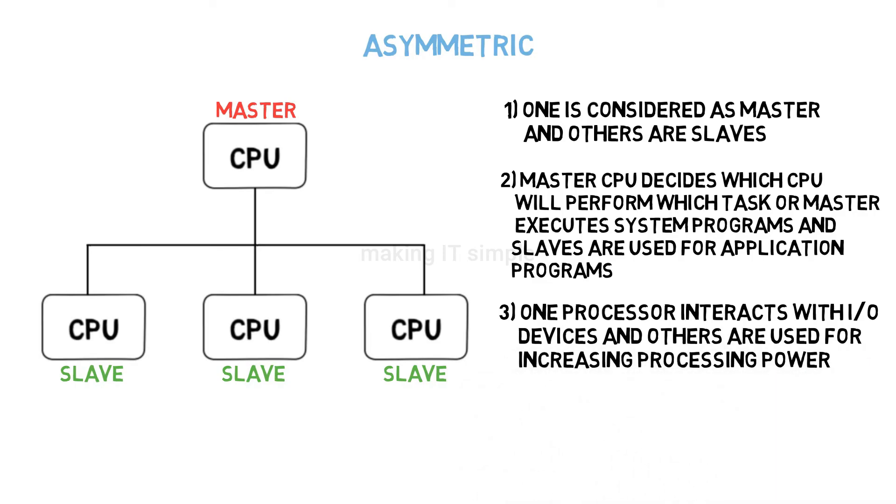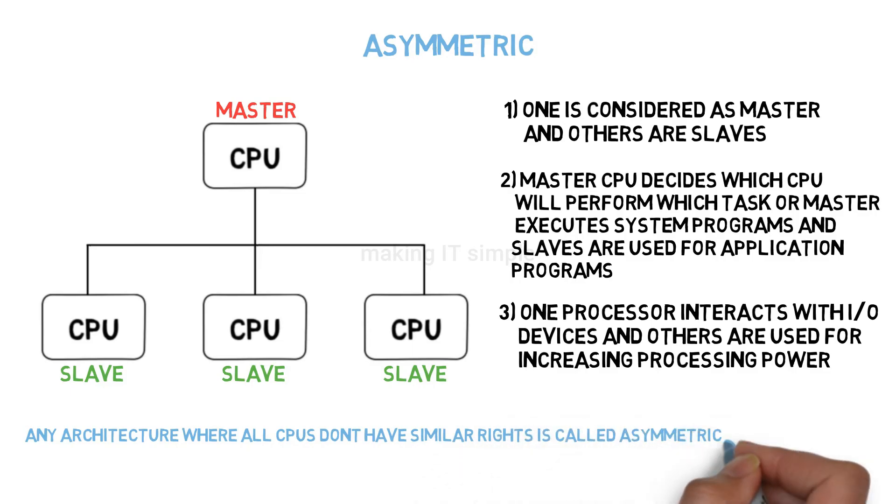And all other processors are used to improve the processing speed. So in any architecture where all CPUs don't have similar rights, this is called asymmetric multi-processing.